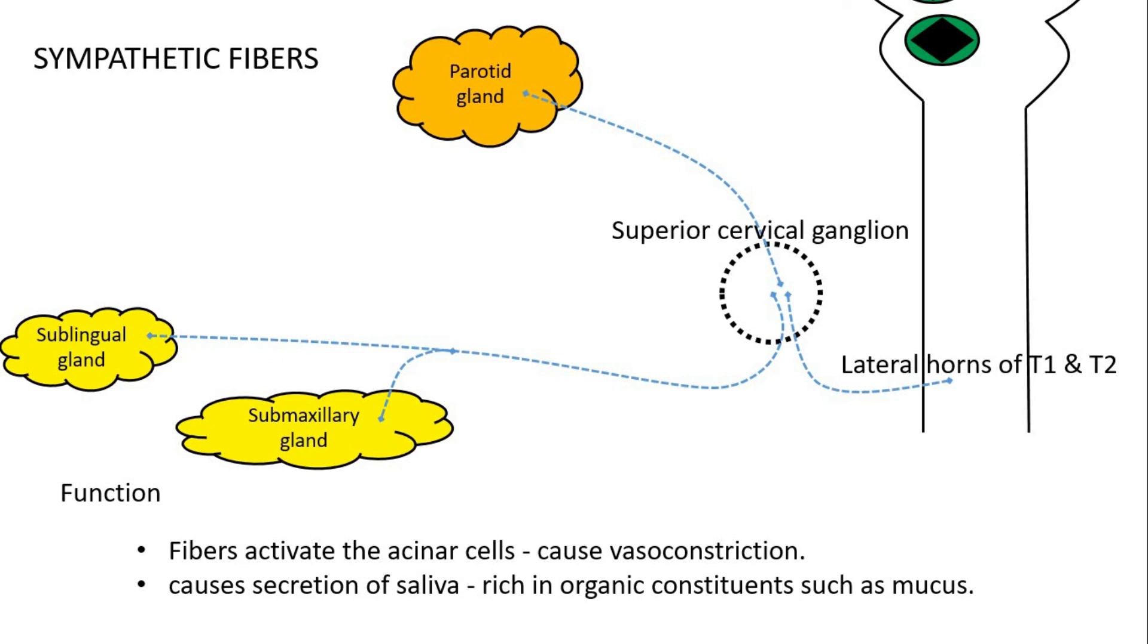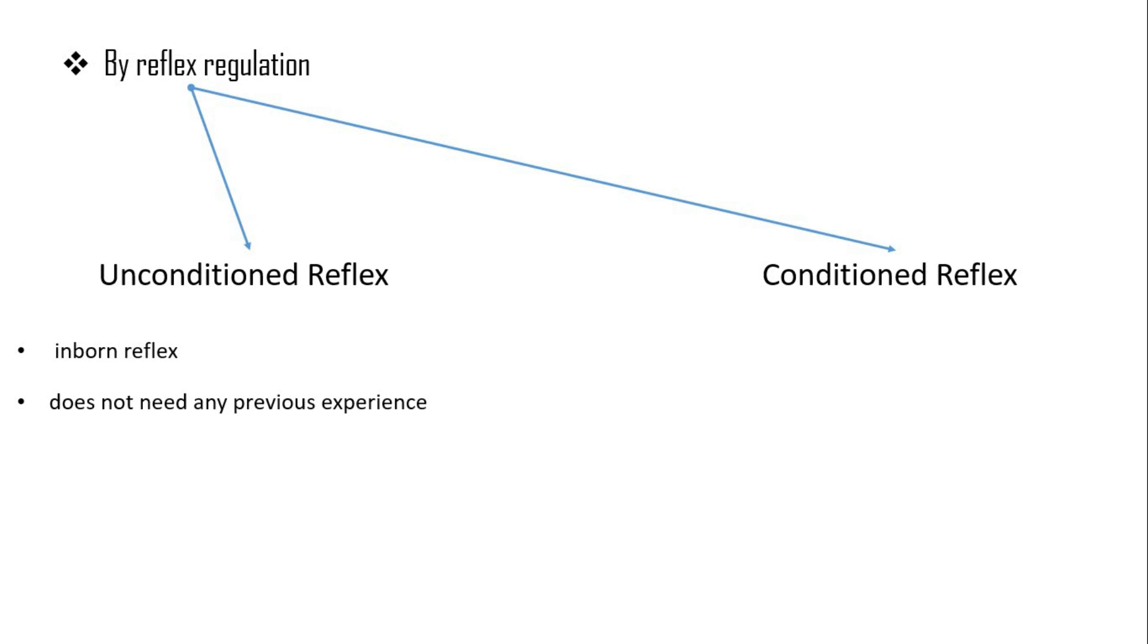Saliva secretion is also regulated by the nervous system through reflex action. Reflex may be of two types: unconditioned and conditioned. Unconditioned reflex is inborn reflex. It's always within us and it does not need any previous experiences. An example of it is the secretion of saliva while food is present in our mouth. Coming to the conditioned reflex, it's acquired reflex. It's acquired by us from the previous experiences we had. An example of it is the secretion of saliva from the sight, smell, hearing, and thought of food.